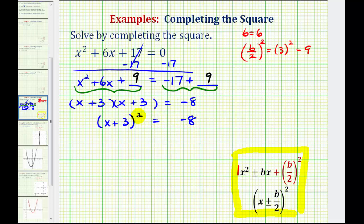And now to undo this squaring and solve for x, we'll take the square root of both sides of the equation. And remember when doing so, we're going to have a plus or minus sign here. And now when we simplify the left side, this will simplify to one factor of x plus 3. And on the right side, we need to simplify the square root of negative 8.